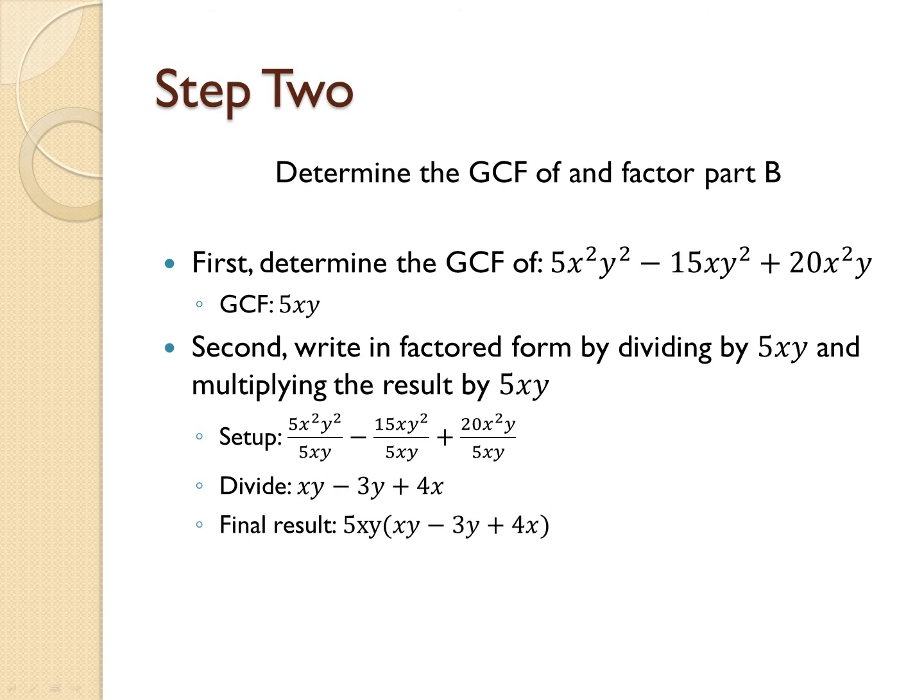So once we write this in factored form, we'll have our factored form of 5xy times the polynomial xy minus 3y plus 4x.